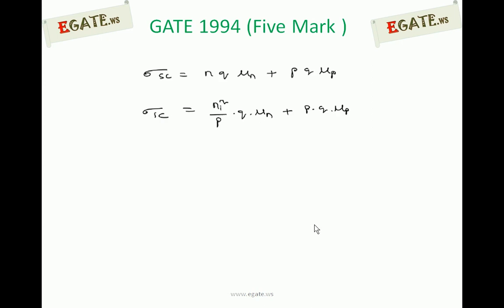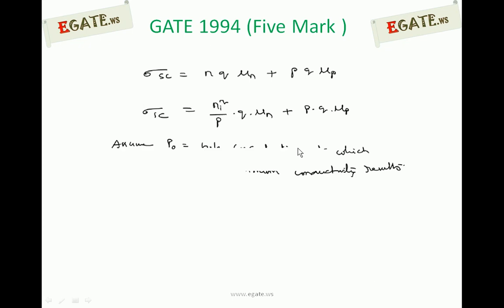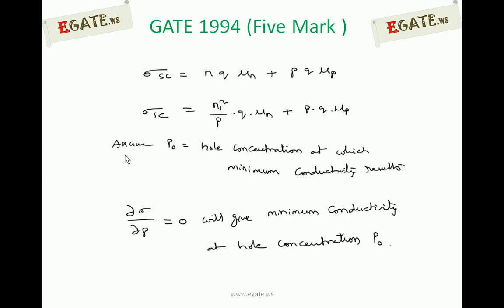Similarly, we find the hole concentration p₀ at which minimum conductivity results. Starting from σ = (Ni²/p)qμn + pqμp (replacing n using mass action law), we assume p₀ is the hole concentration at which minimum conductivity occurs. Setting dσ/dp = 0 gives the value of p₀.